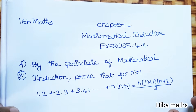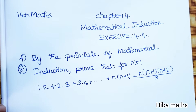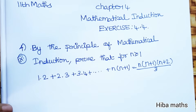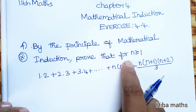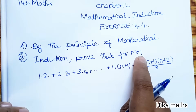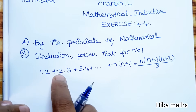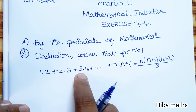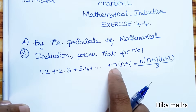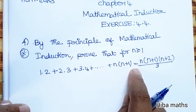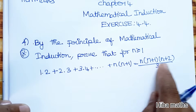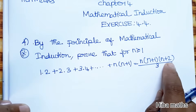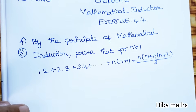Hello students, welcome to HIBAM, 11th standard, Chapter 4 Mathematical Induction, Exercise 4.4, fourth question. By the principle of mathematical induction, prove that for n greater than or equal to 1: 1·2 + 2·3 + 3·4 + ... + n(n+1) = n(n+1)(n+2) / 3.